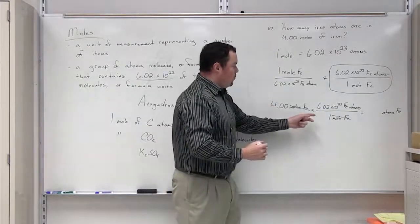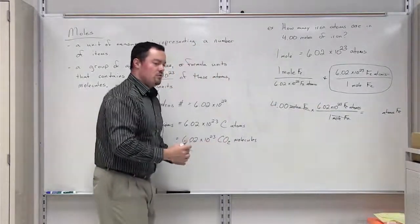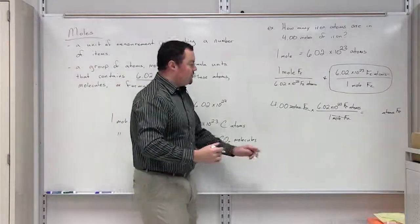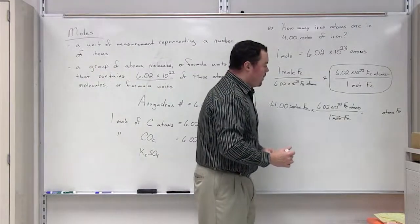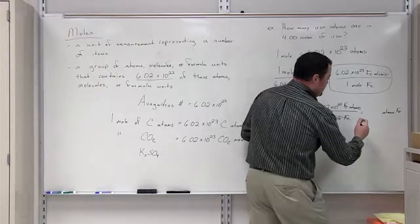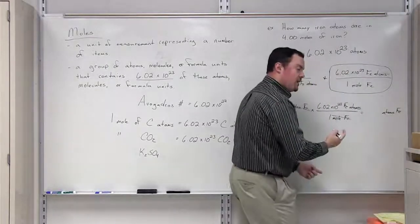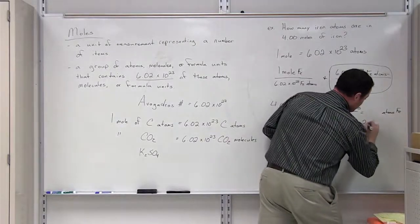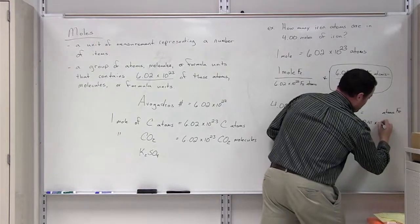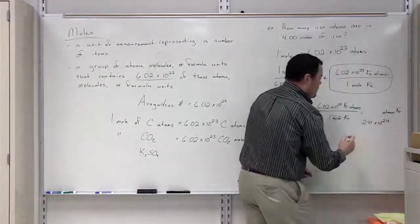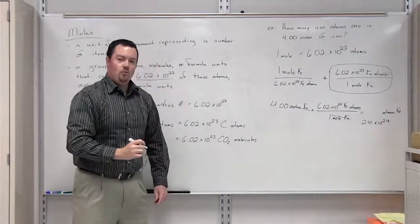So we multiply 4 times 6.02 times 10 to the 23rd and then we divide by 1 and we find that 4 moles of iron is equal to 2.41 times 10 to the 24th power. This is the number of actual iron atoms that are contained in 4 moles of iron.